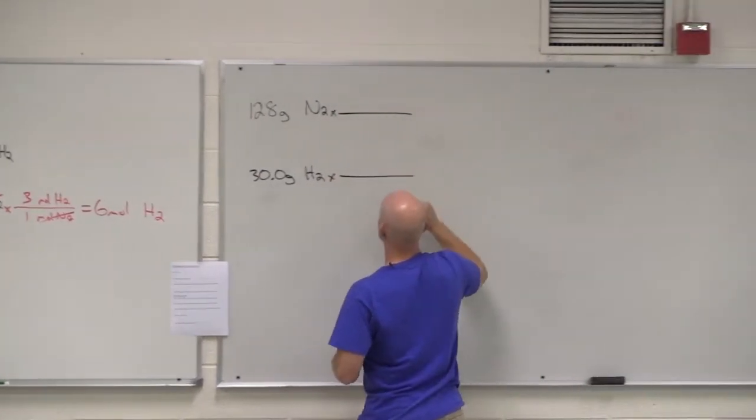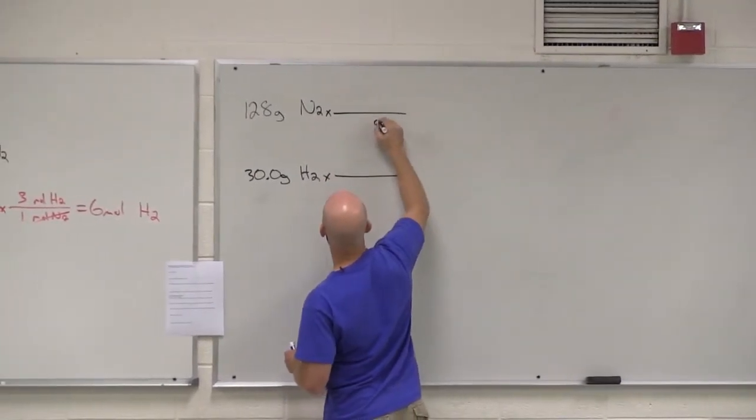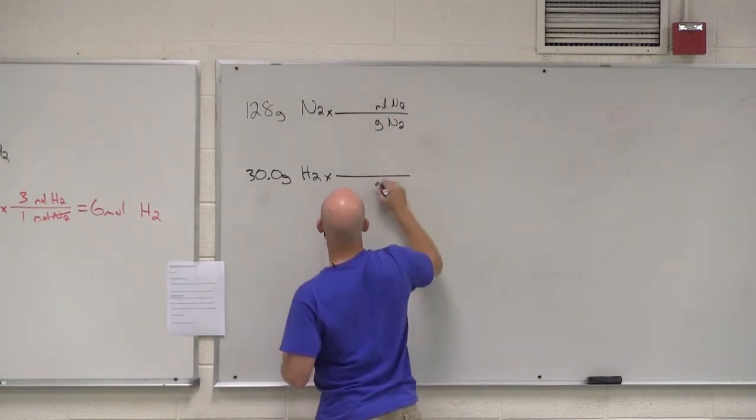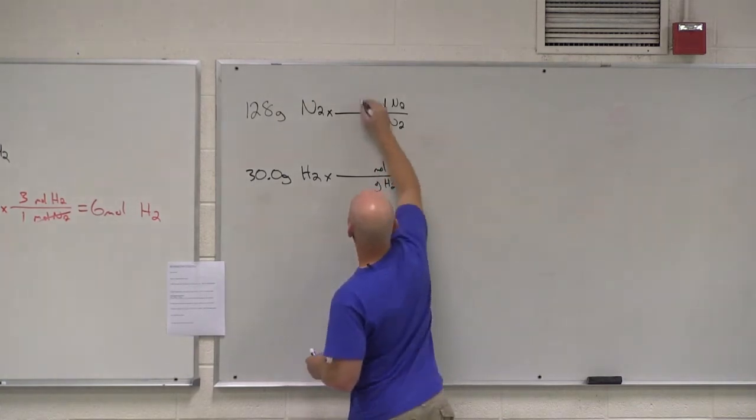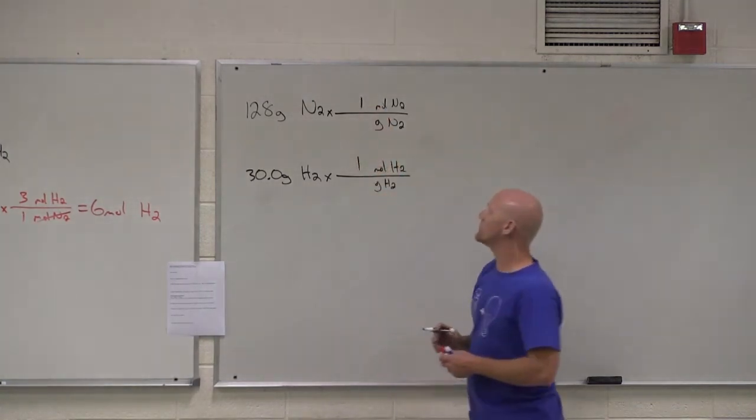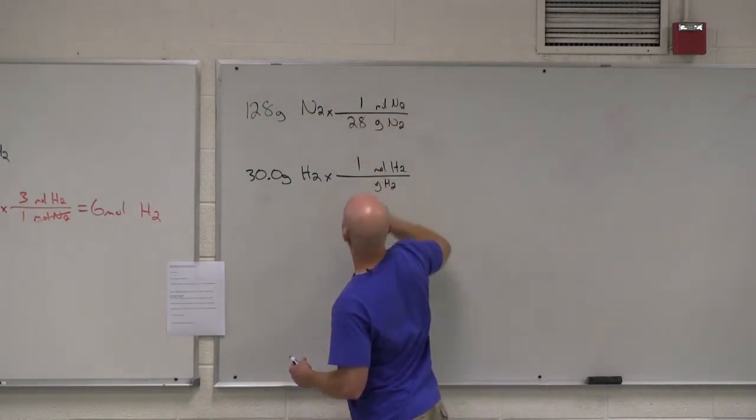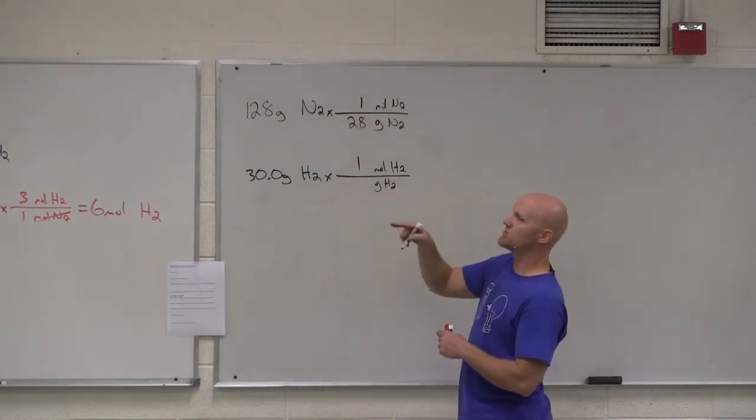Yeah, we will get the molar mass right off the periodic table and convert both of these to moles. So grams of N2 on the bottom, moles of N2 on top, grams of H2 on the bottom, moles of H2 on top. And it's always the mass of one mole for molar mass. And for nitrogen, we already decided that was, well, again, but it's N2, not N, so 28 grams. And for H2, similarly, it's not one, but two.